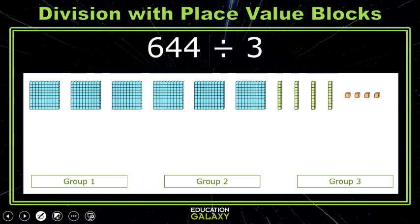Let's investigate division with place value blocks. Take 644 divided by 3, for example. If we consider the place values, 644 is made up of 6 hundreds, 4 tens, and 4 ones. Next, we want to divide it into 3 equal groups.